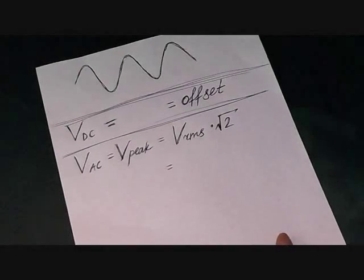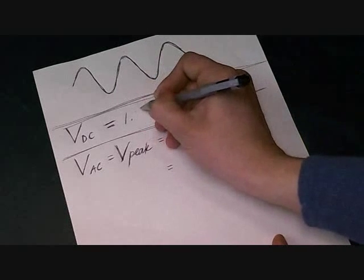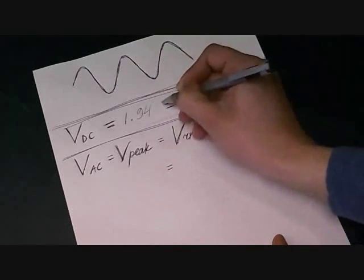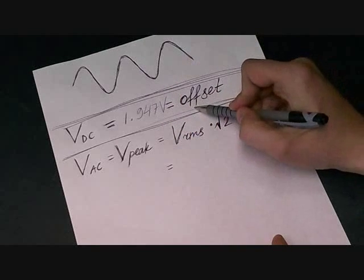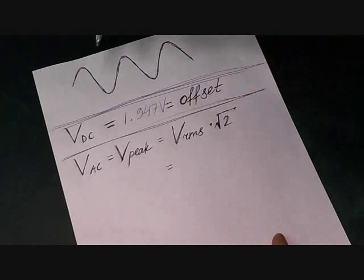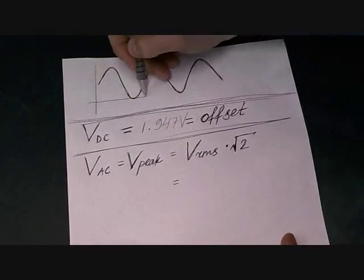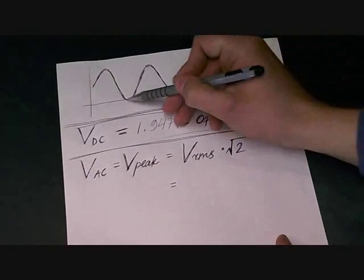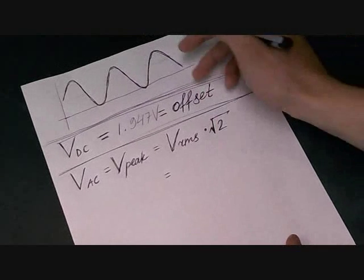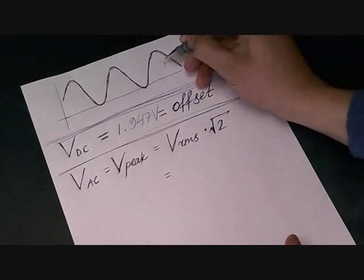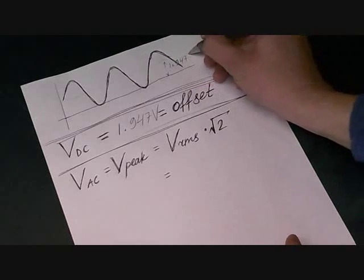So the DC measurement that we got was 1.947 volts. That is also our offset. That's what we're going to see on the oscilloscope, which will look like this. From the axis to the center of the wave, we're going to see 1.947 volts.